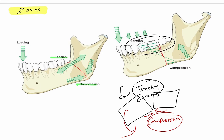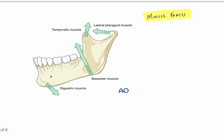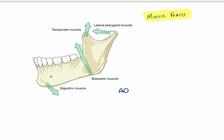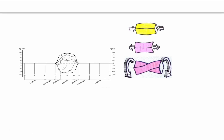These tension and compression zones are present during function, for example while chewing. But even at rest, forces are acting on the mandible. The lateral pterygoid attached to the condyle pulls it anteriorly; the temporalis muscle attached on the coronoid process pulls it superiorly; the masseter pulls the posterior portion superiorly; and the digastric muscle pulls the anterior part downward. So even at rest we have forces acting on the mandible.